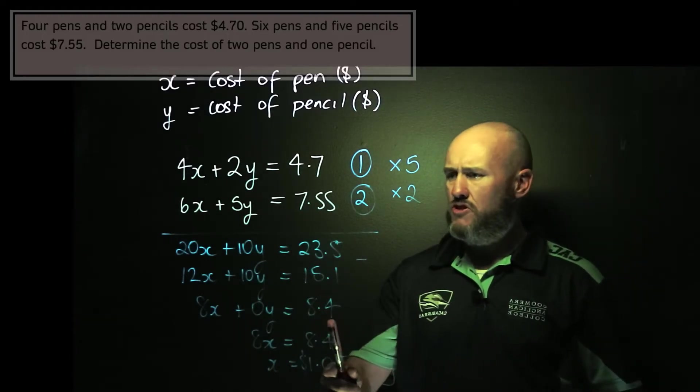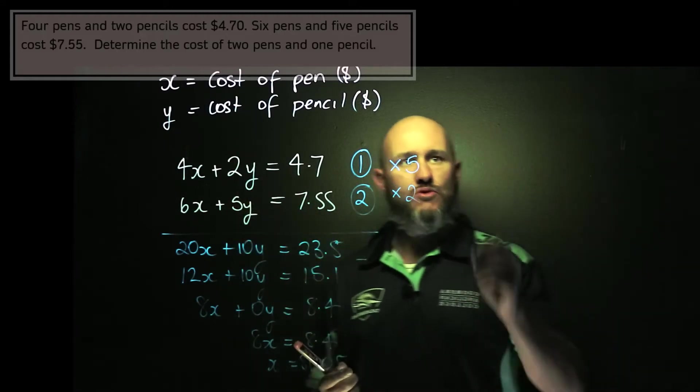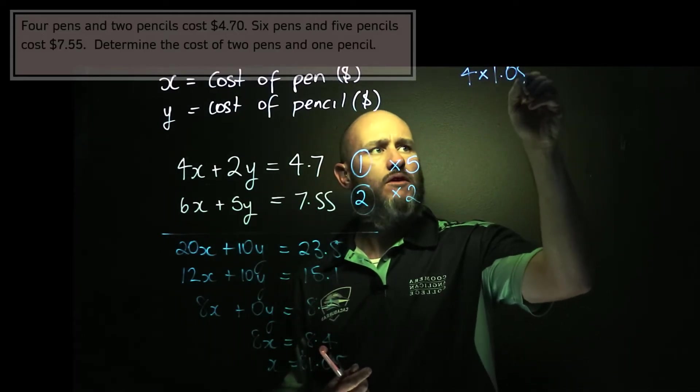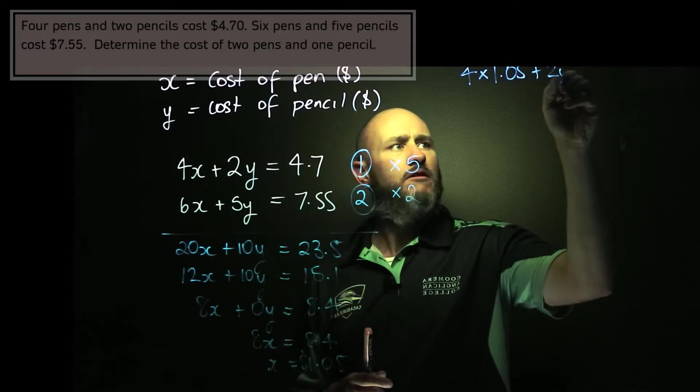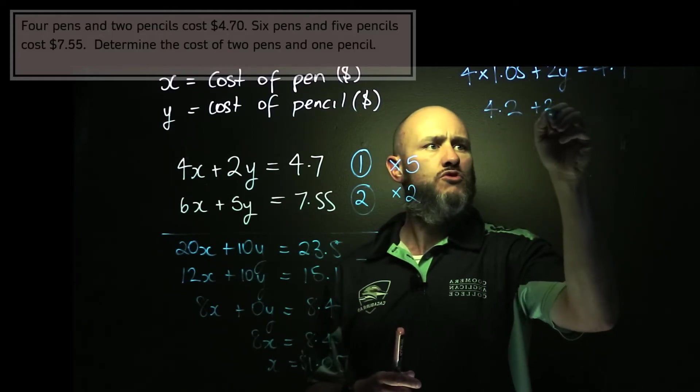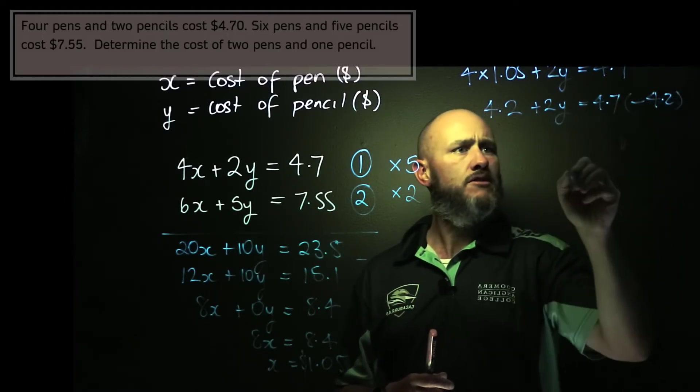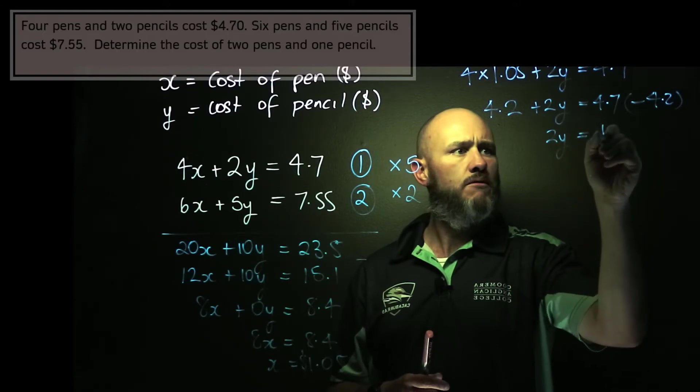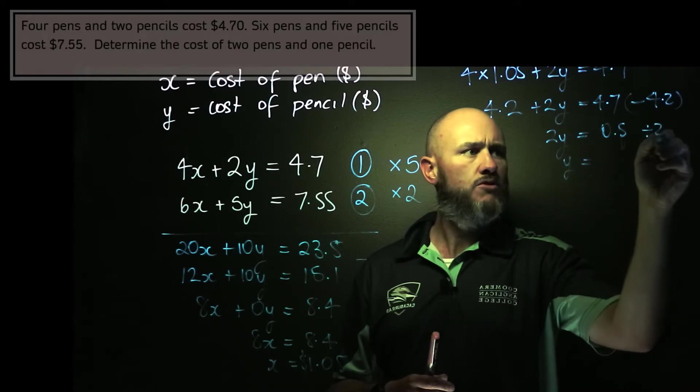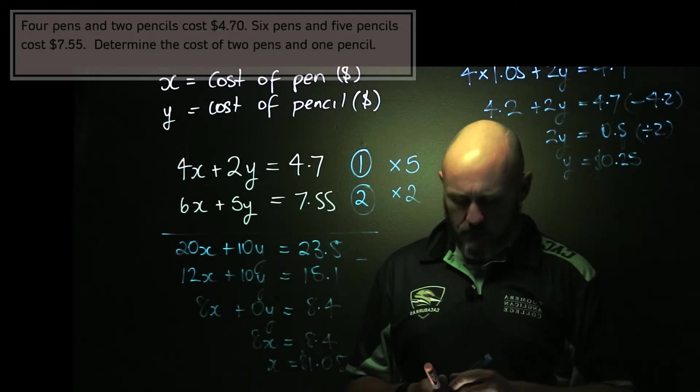Now my second solution is I'm going to substitute this back in to find Y. I've done the elimination method, so it's not going to be easy, but equation 1 is a little bit simpler, so let's do this. So I get 4 times 1.05 plus 2y is equal to 4.7. So this is equal to 4.2 plus 2y equals 4.7. I subtract 4.2 from both sides and get 2y equals 0.5. And that gives me y is equal to, divided by 2, 0.25 or 25 cents.